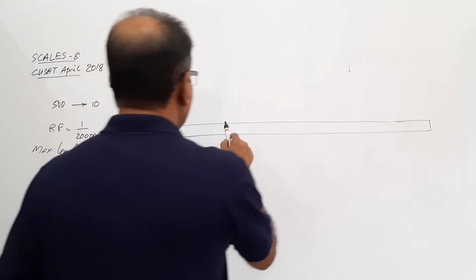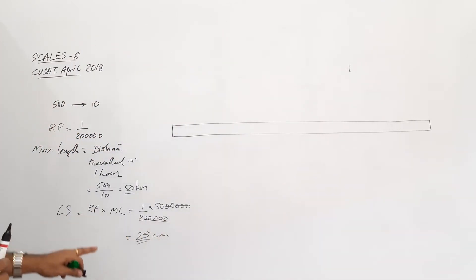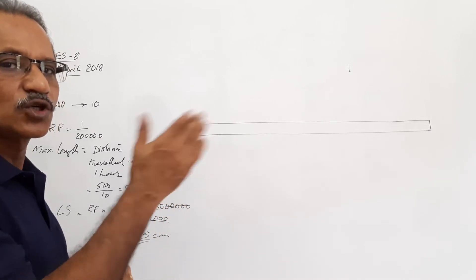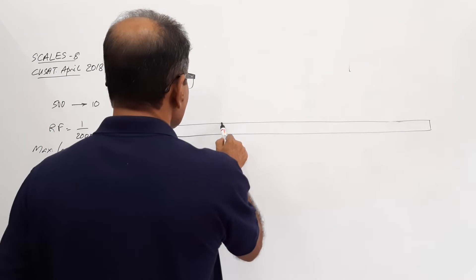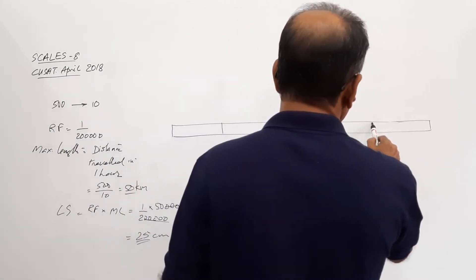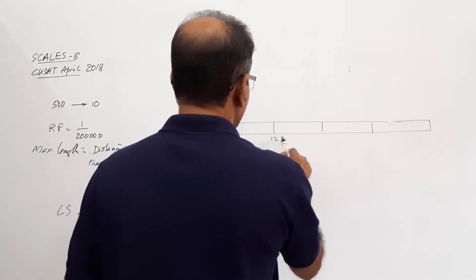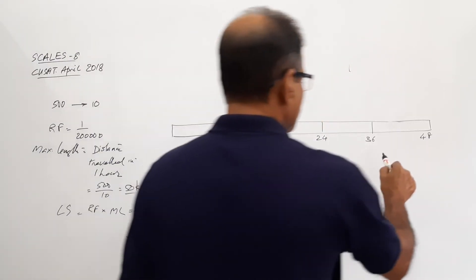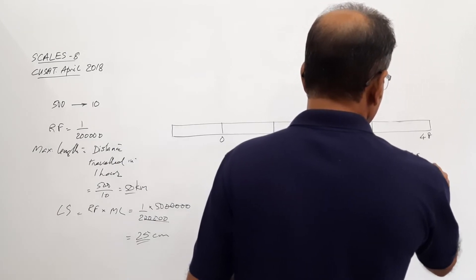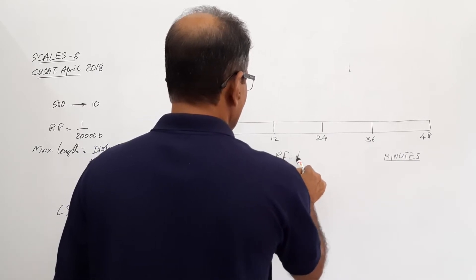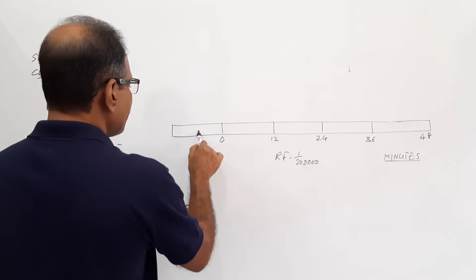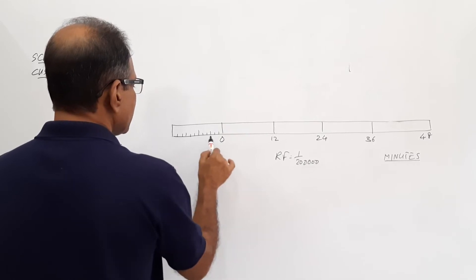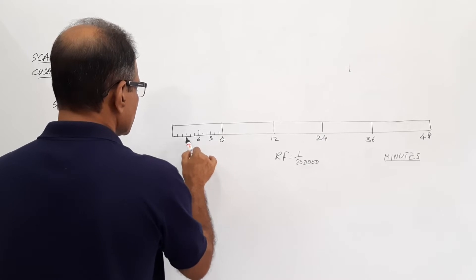I divide this into 5 equal parts — 5 equal parts of 10-minute seats. The divisions are marked: 0, 12, 24, 36, 48. The unit is minutes. I write RF at the center. I then divide the leftmost division into 12 equal parts, so that each sub-division represents 1 minute.